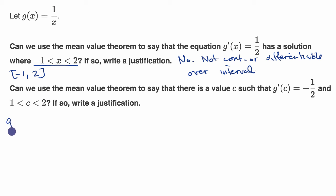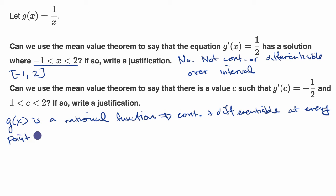So we can write: g of x is a rational function, which lets us know that it is continuous and differentiable at every point in its domain.